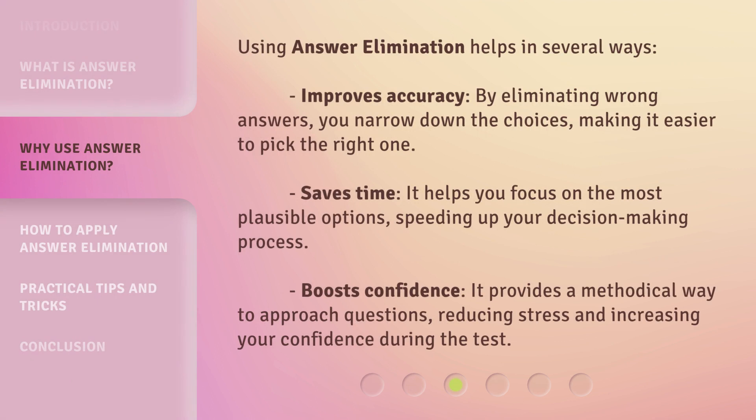Using answer elimination helps in several ways. First, it improves accuracy — by eliminating wrong answers, you narrow down the choices, making it easier to pick the right one. Second, it saves time by helping you focus on the most plausible options, speeding up your decision-making process. Third, it boosts confidence by providing a methodical way to approach questions, reducing stress during the test.